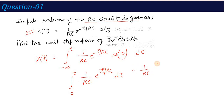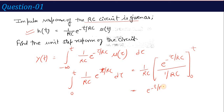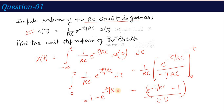The 1/RC is a constant so it comes out. The integration of e^{-τ/RC} gives e^{-τ/RC} divided by (-1/RC), with limits 0 to t. The RC and RC cancel out. Putting in the limits: at t we get e^{-t/RC}, at 0 we get 1. Due to the minus sign, the final result becomes y(t) = 1 - e^{-t/RC}. This is the step response of the RC circuit when the impulse response is given.